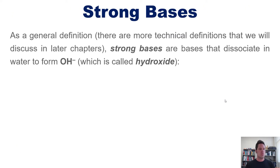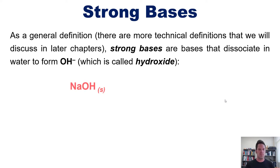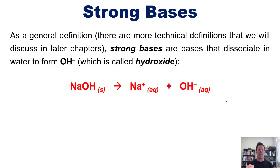What about strong bases? As a general definition — and again there are more technical definitions we'll cover in later chapters — strong bases are bases that dissociate in water to form OH⁻, called hydroxide. For example, sodium hydroxide is a strong base; you throw it in water and it separates out to form sodium cation and hydroxide anion, so it is a strong base by this definition.